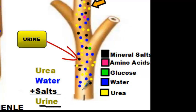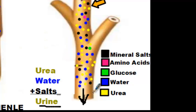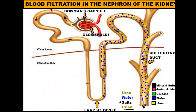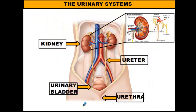Urine then makes its way out of the nephron and out of the kidney. It travels down the ureter and is stored inside the urinary bladder. As the urinary bladder fills up and cannot hold any more, that urine leaves the body through the urethra and then, preferably, into a toilet. That's how the urinary system works, how it helps out in excretion, and how our body gets rid of metabolic wastes.